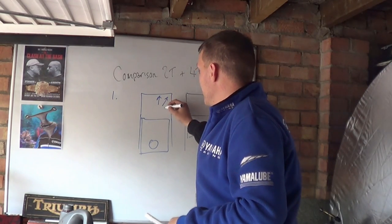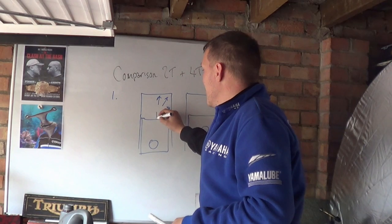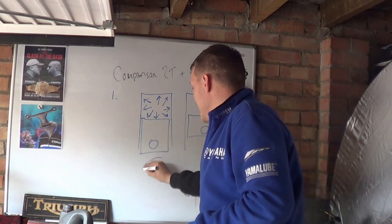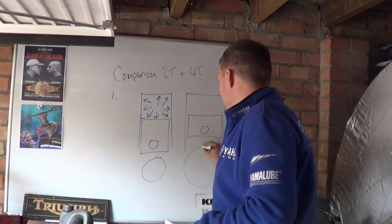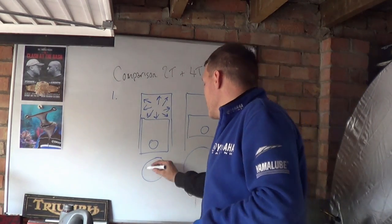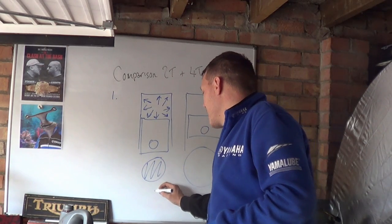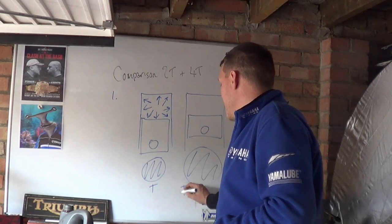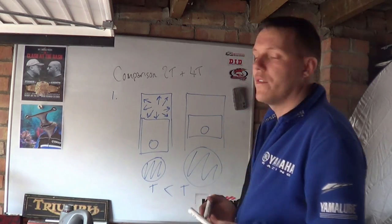Whereas in a four-stroke, generally it's more over-square, so your piston diameter is bigger. Because force is being applied to every single square centimeter, square millimeter, square inch inside this combustion chamber, the bigger surface area you have, the more pressure will be applied to that piston. So because this is smaller, the torque is smaller for a two-stroke.